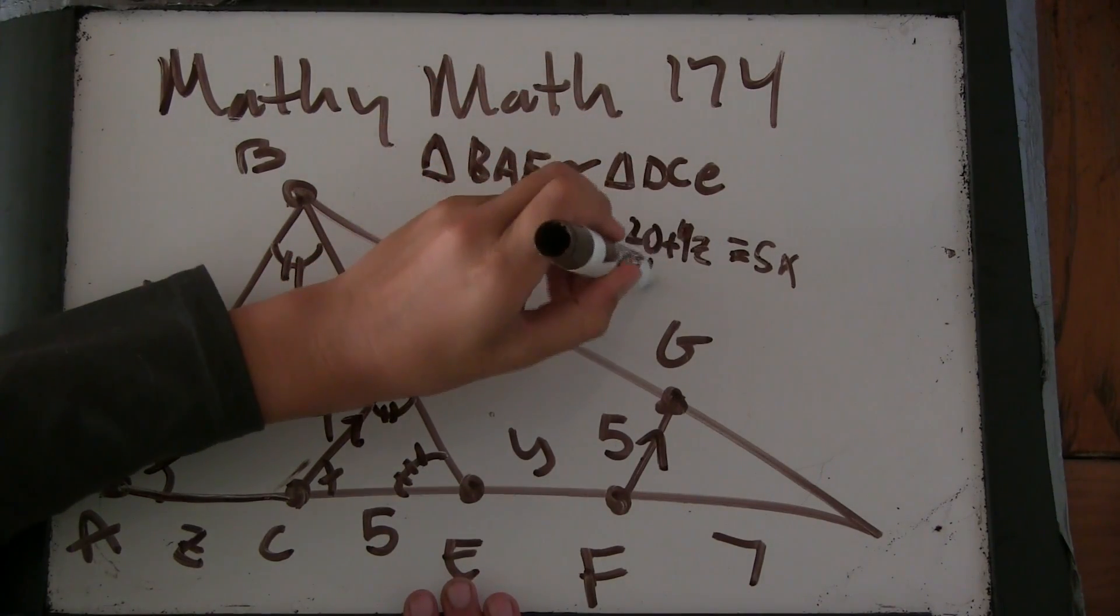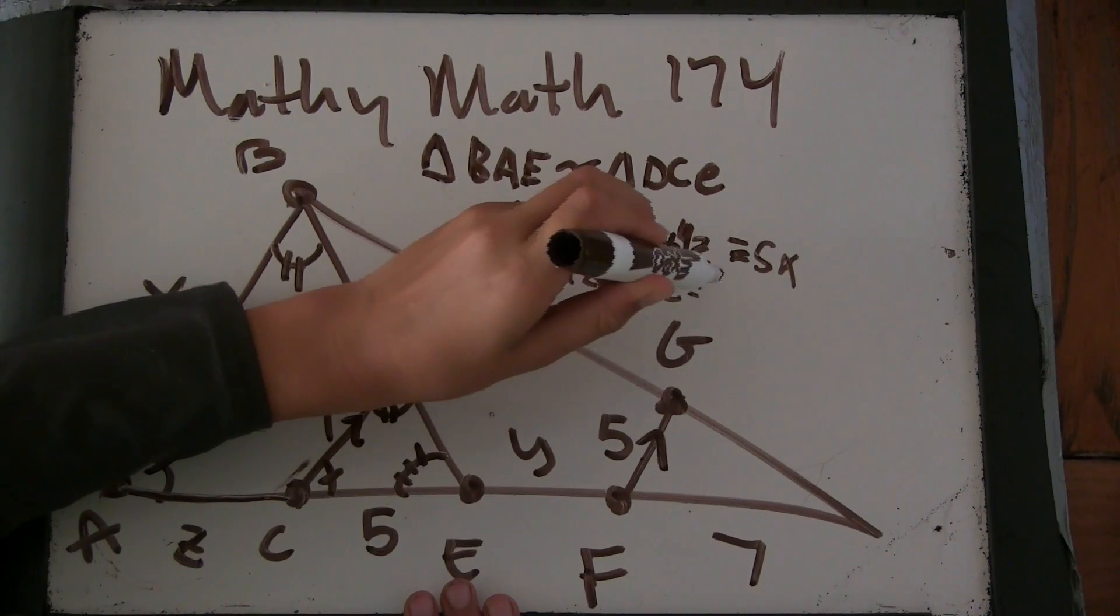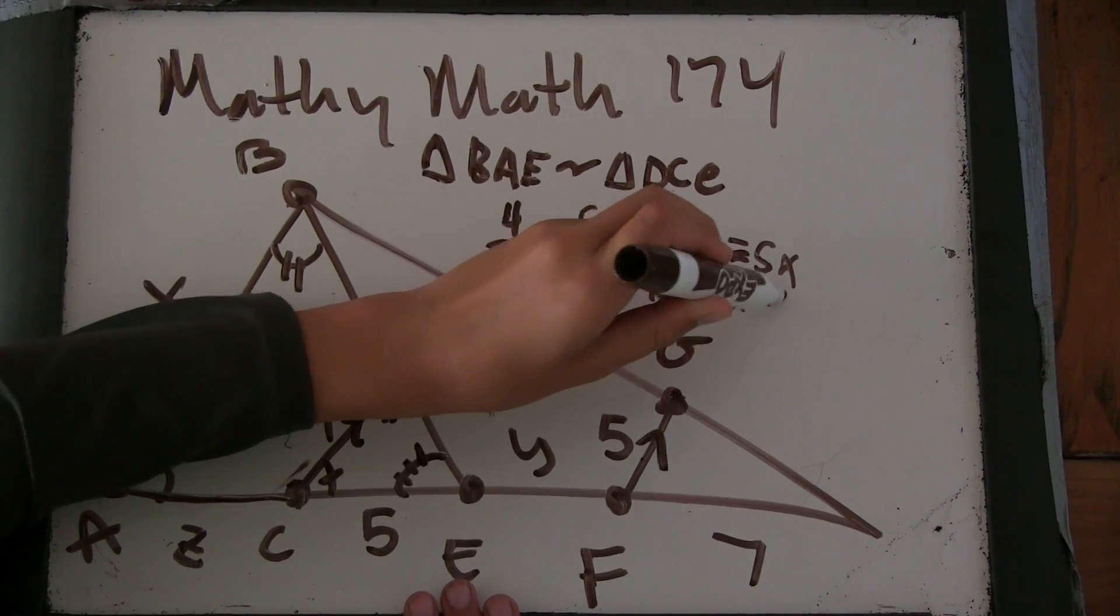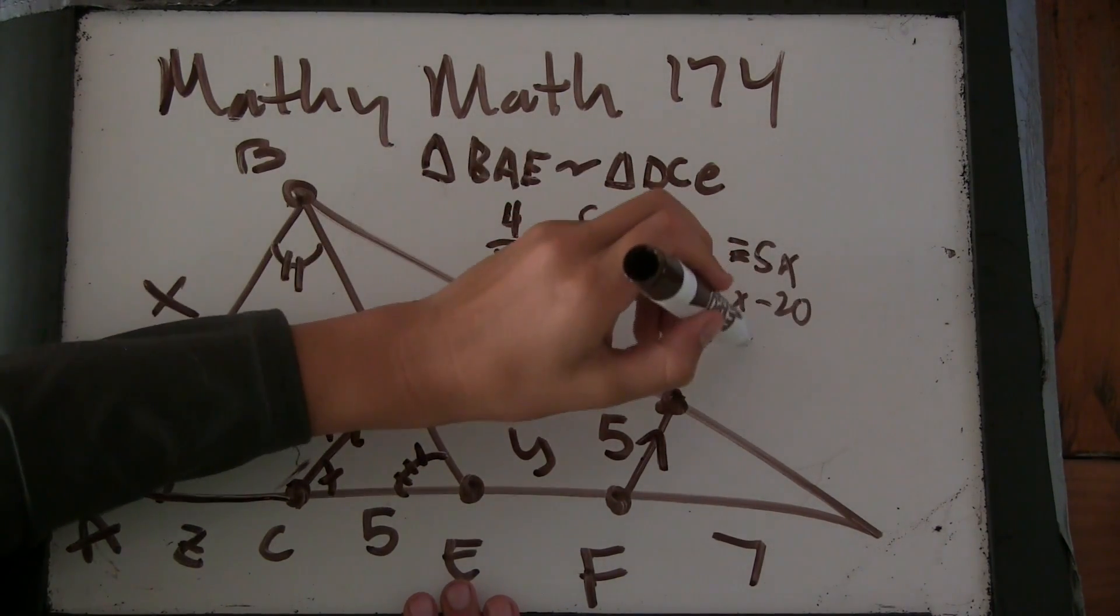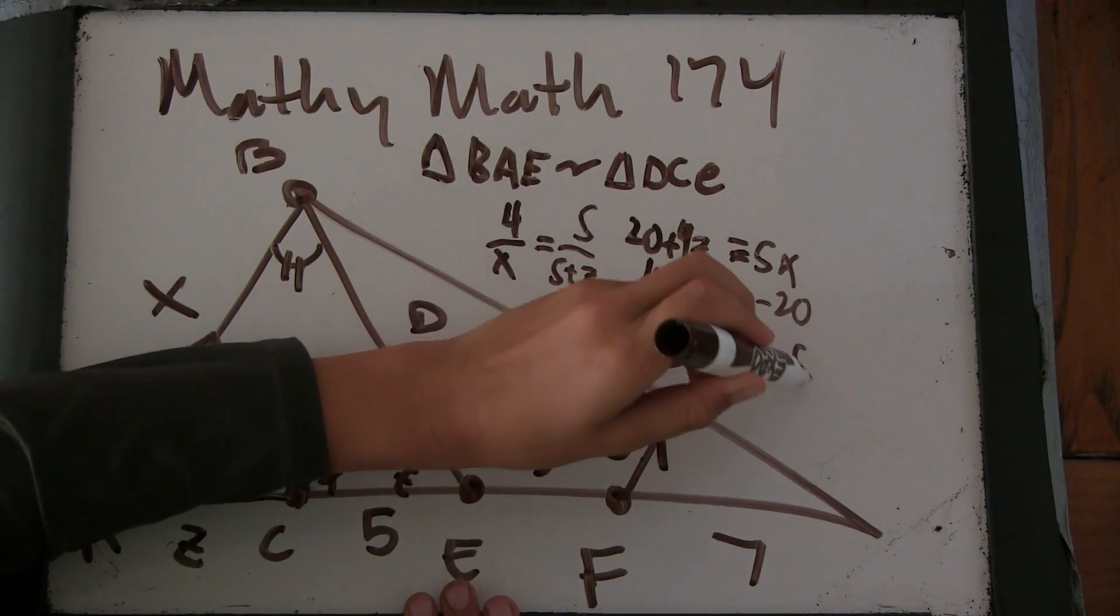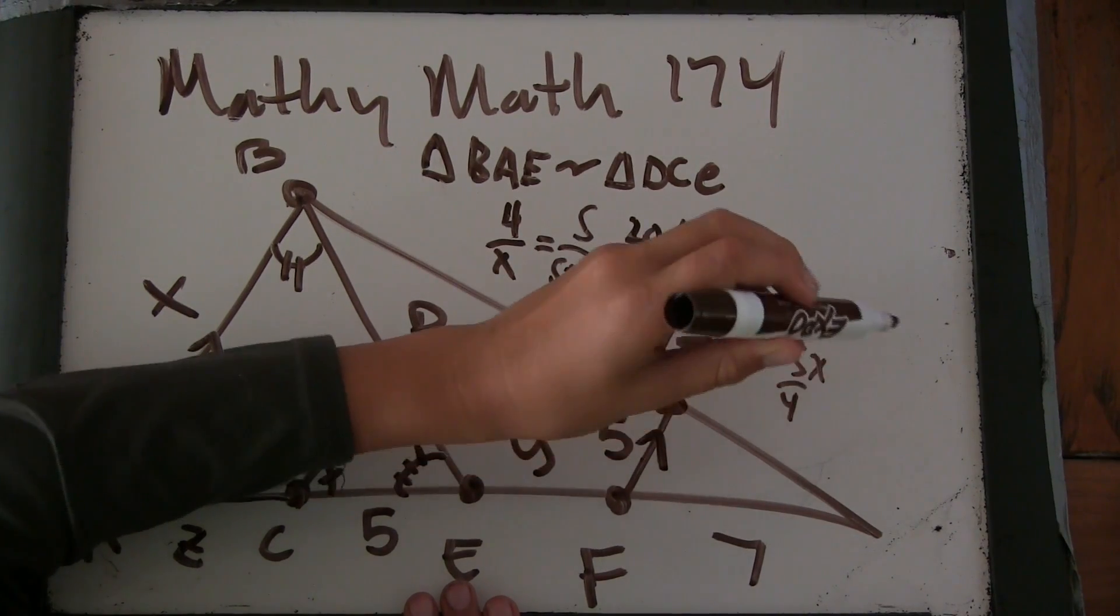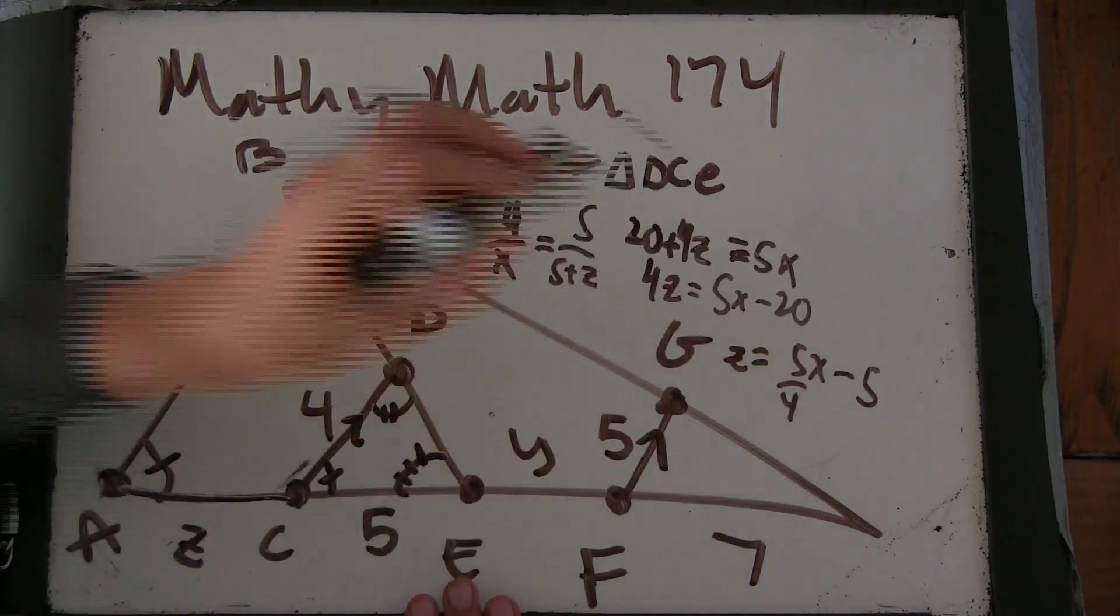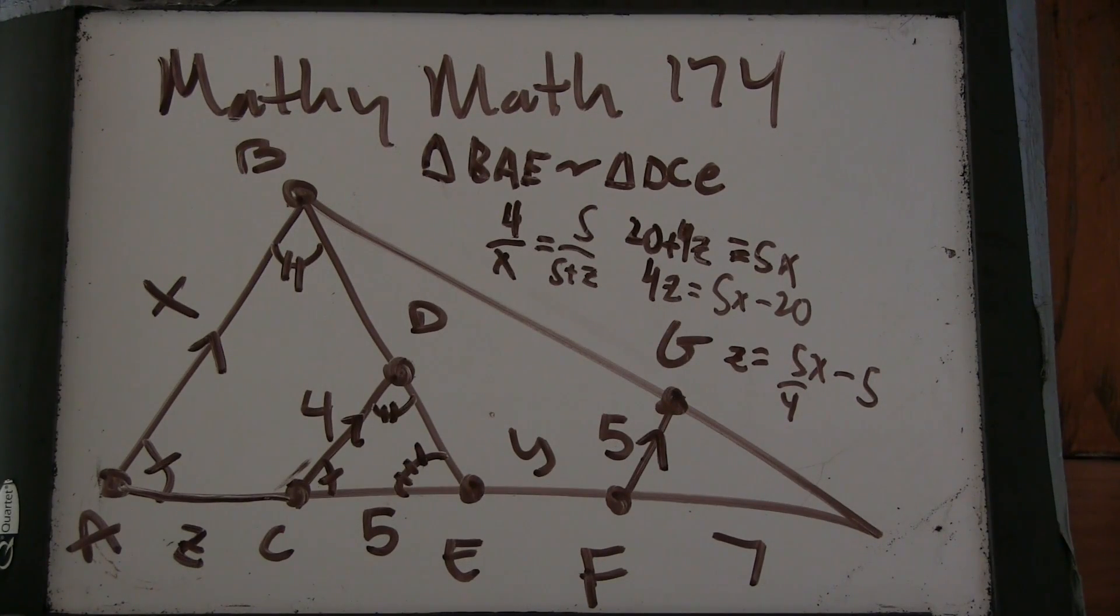Okay. So 4Z equals 5X minus 20. Alright. So Z is 5 fourths X minus 5. Yeah.